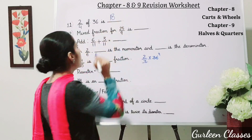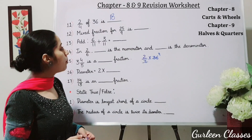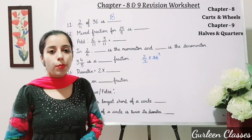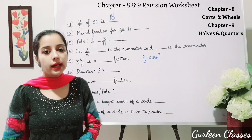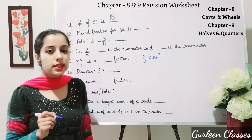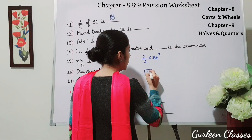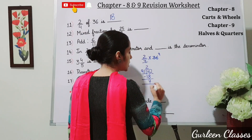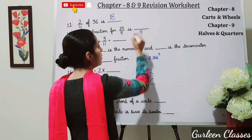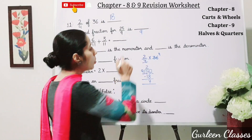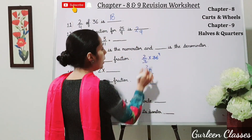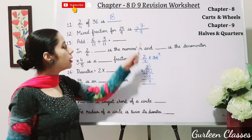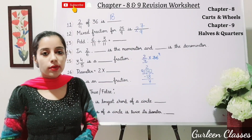Number 12: mixed fraction for 25 upon 9. Students, we have to convert this improper fraction into a mixed fraction. Divide 25 by 9 — 9 twos are 18, subtract, remainder is 7. The denominator 9 remains the same, the quotient 2 comes in front as the whole number, and the remainder 7 is the numerator. So the answer is 2 whole 7 upon 9. Check: 9 × 2 = 18, plus 7 = 25.